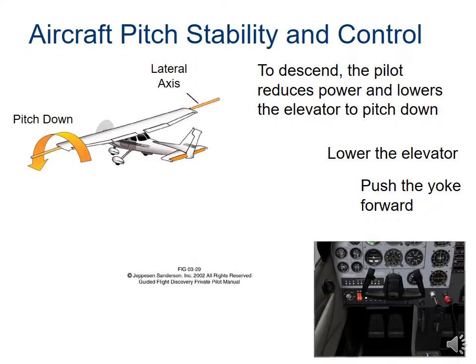Stability about the lateral axis is called pitch, and it has to do with where the nose is pointing. If we point the nose down, we're pitching down; if we point the nose up, we're pitching up. If we want to descend, we first lower the power to reduce lift and start heading toward the ground. We don't want the plane to stall, so we point the nose down a little and the elevator pitches down — that helps us head toward the ground.